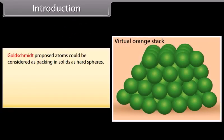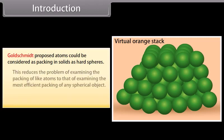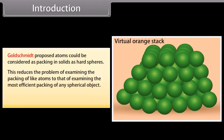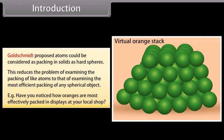Goldschmidt proposed that atoms could be considered as packing in solids as hard spheres. This reduces the problem of examining the packing of like atoms to that of examining the most efficient packing of any spherical object. For example, have you noticed how oranges are most effectively packed in displays at your local shop?